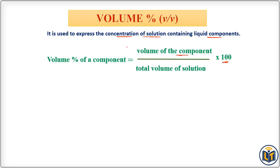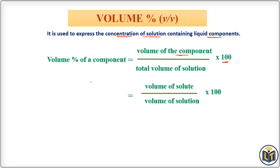Volume percentage of a solute is equal to the volume of the solute divided by the volume of the solution, multiplied by 100. In the case of solvent, volume percent of solvent is equal to the volume of the solvent divided by the volume of the solution, multiplied by 100.